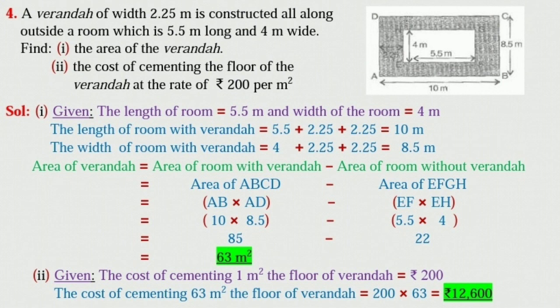Here given, the length of room is equal to 5.5 meter and the width of the room is equal to 4 meter. Now, the length of the room with veranda is equal to 5.5 plus 2.25 plus 2.25 is equal to 10 meter. The width of room with veranda is equal to 4 plus 2.25 plus 2.25 is equal to 8.5 meter.